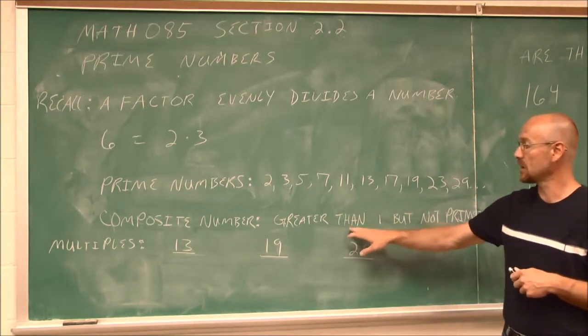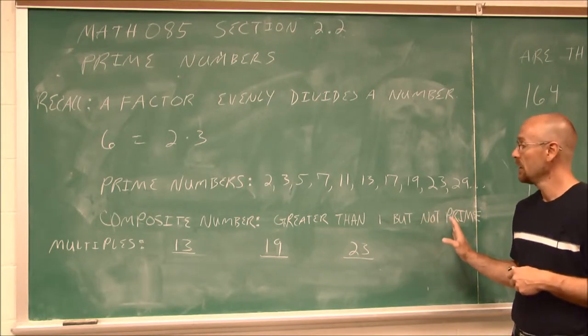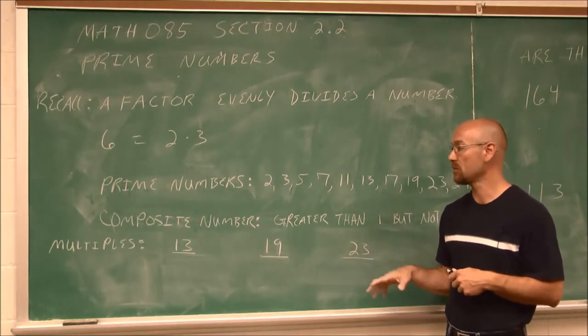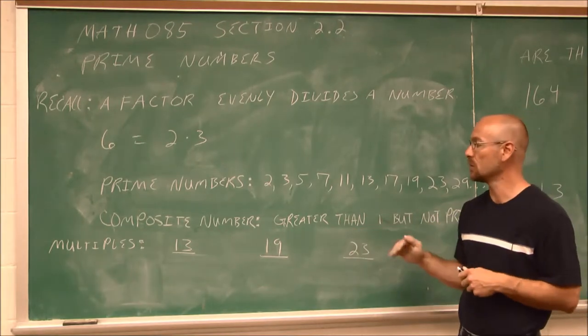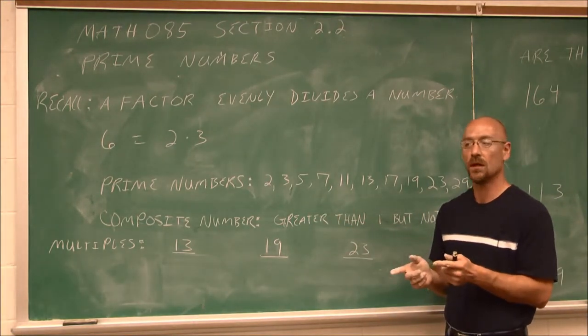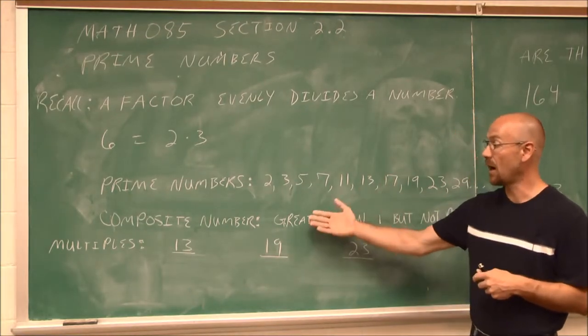Composite numbers are numbers that are greater than 1, but are not prime. So it's not going to be in this list, but they must be greater than 1. One thing we have to note is 1 is neither a prime number or a composite number. Composite numbers means they have multiples, which means a number times a number will give us a composite number.